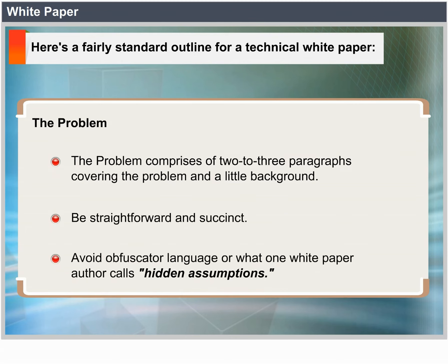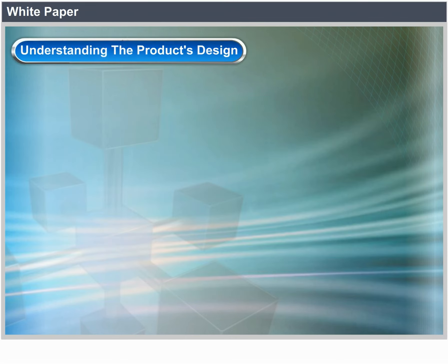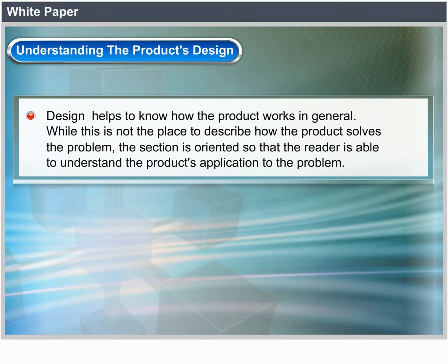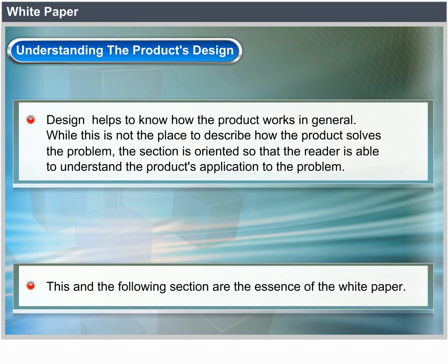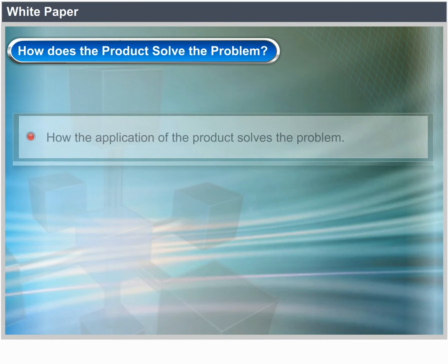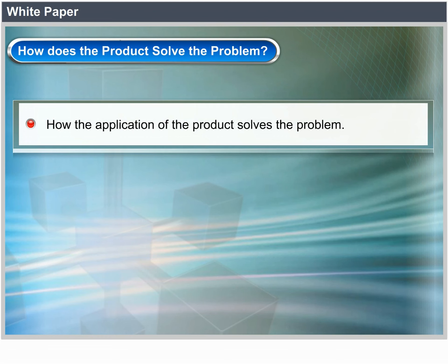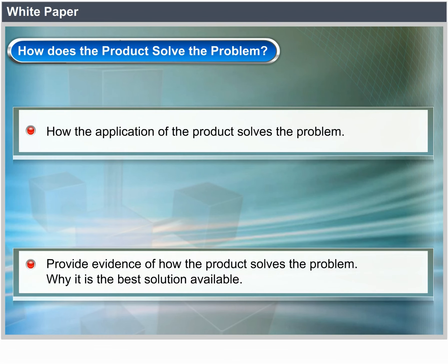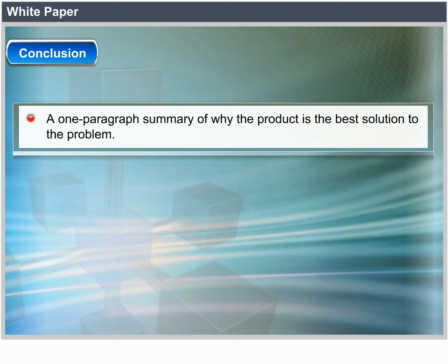Understanding the product's design: How the product works in general. While this is not the place to describe how the product solves the problem, the section is oriented so that the reader will be able to understand the product's application to the problem. This and the following section are the meat of the white paper. How the product solves the problem: Provide evidence of how the application of the product solves the problem and why it is the best solution available.